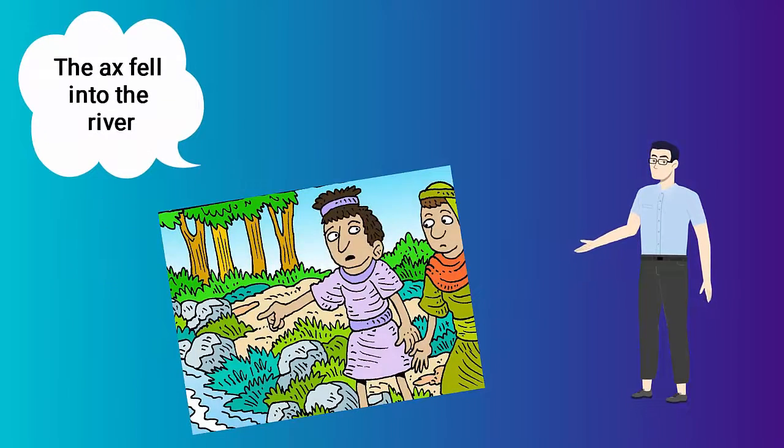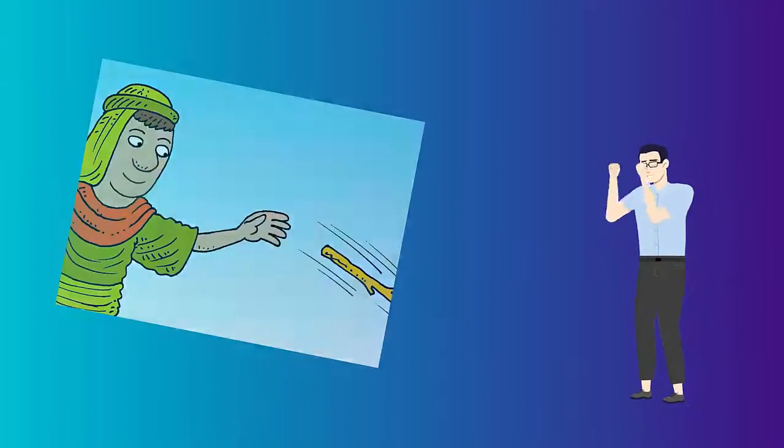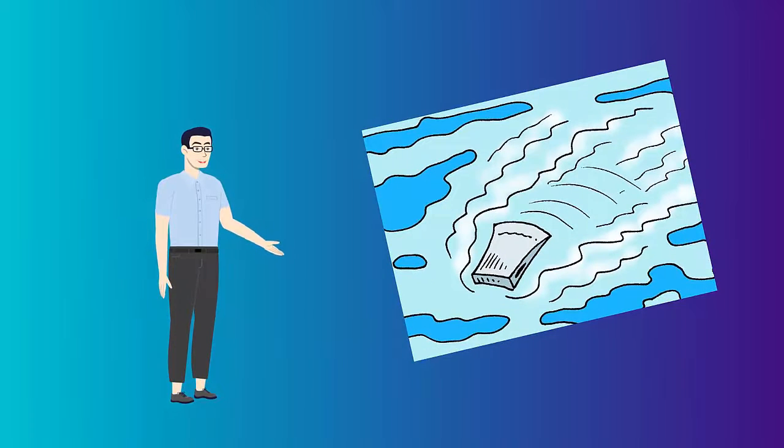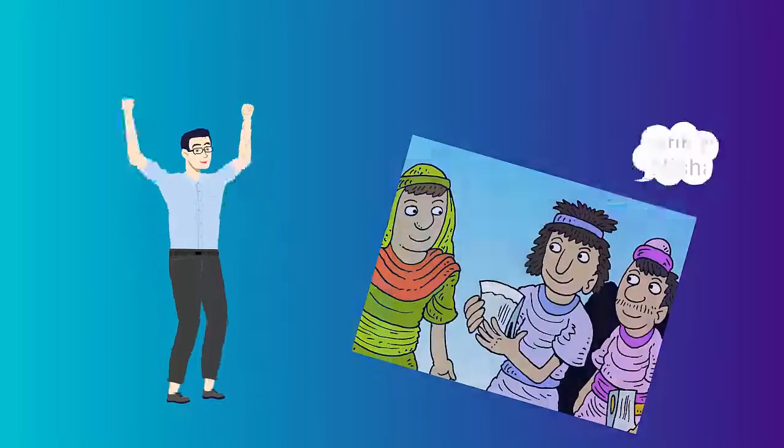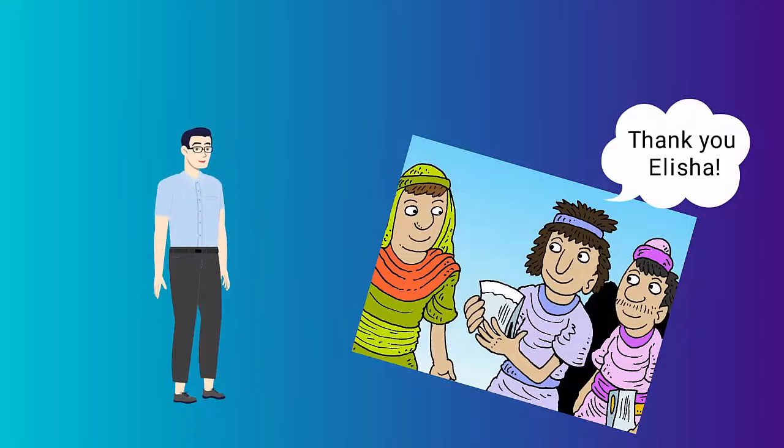When they told Elisha what had happened, he threw a stick into the water where the axe had fallen. Then, something remarkable happened. The axe floated to the top of the water. They were very happy that they could find the axe.